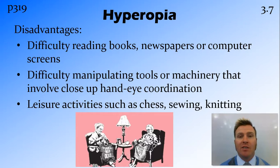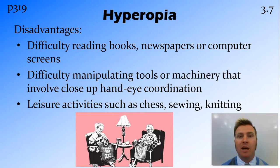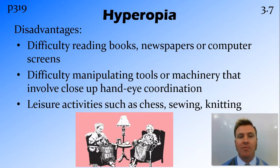There are a few disadvantages to being long-sighted, and all of them are to do with not being able to see things in front of you very well. This impacts reading books, newspapers, or computer screens, trying to manipulate tools or machinery with your hands, or doing something close to your face like playing chess or sewing — all of these involve focusing at a very close distance, which is not possible if you have hyperopia.